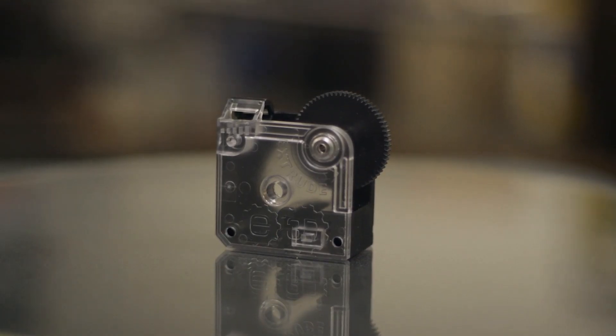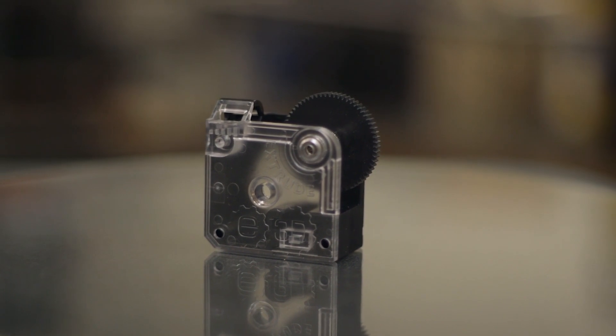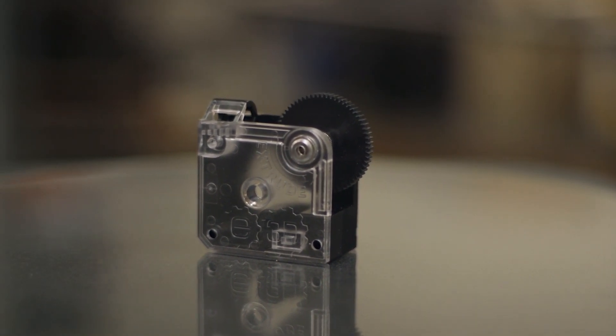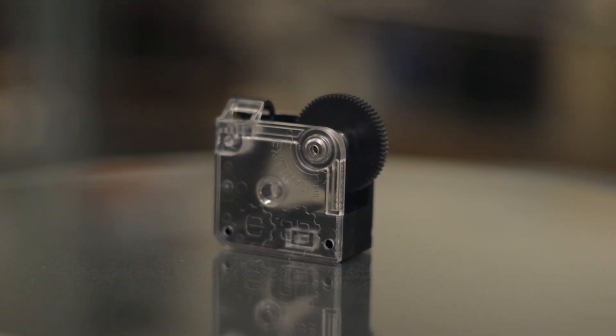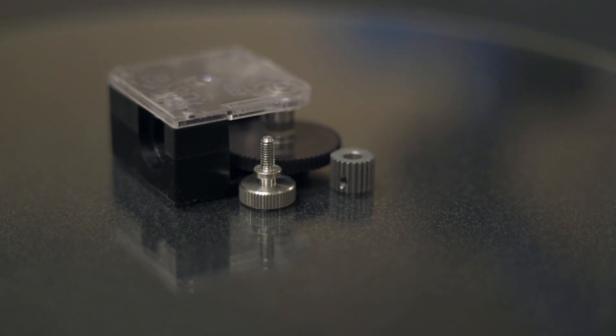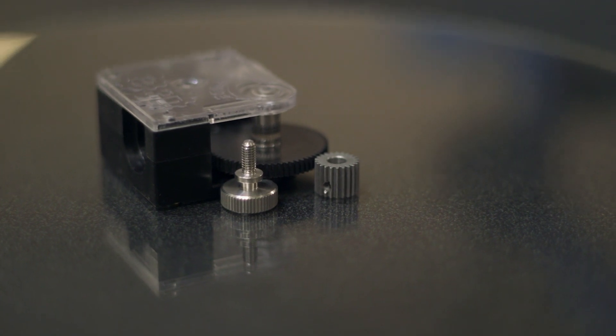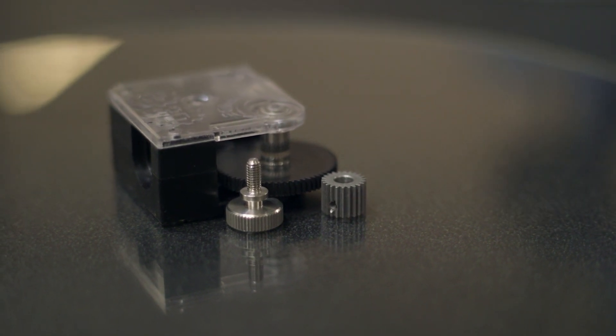E3D's first extruder, the Titan Universal Extruder, as the name suggests, was designed to be a universal base for any 3D printer to utilize, 1.75mm and 2.85mm alike. The Titan featured a compact 3 to 1 gear ratio to get more torque out of the extruder motor to prevent skip steps while printing.